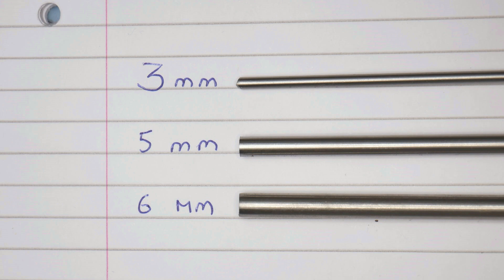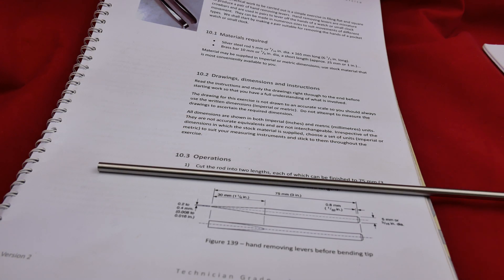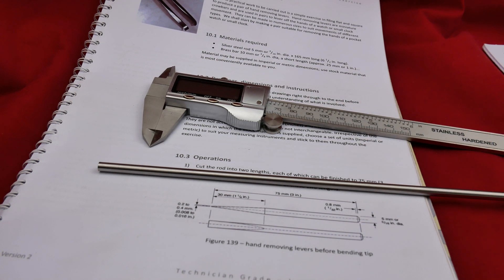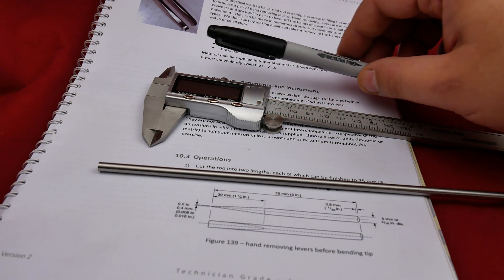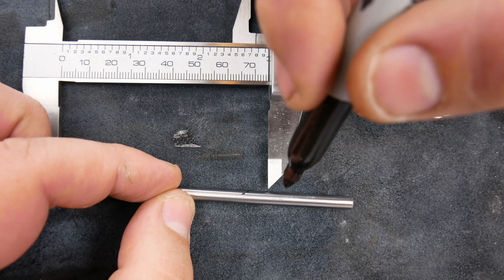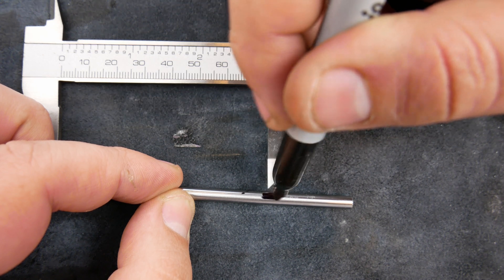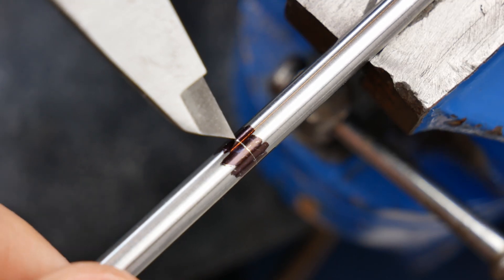We're starting off with a piece of silver steel that's five millimeters in diameter. Silver steel is also called tool steel or drill rods and is great for making things like punches, levers and screwdrivers. I marked off the length that I needed with a pair of calipers and then cut it, leaving a bit of extra just in case the sawing was a bit wonky.